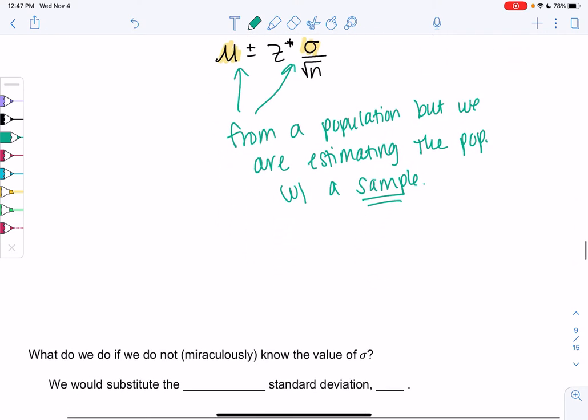What should we do if we do not miraculously know the value of σ? We don't know the population. So it should make sense that we probably want to substitute the sample standard deviation, which was s. It just doesn't quite immediately replace it. You might or might not remember, but σ and s weren't quite the exact value.